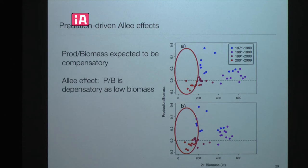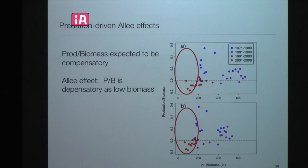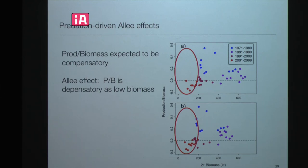If you look at the relationship between stock productivity and its biomass, normally in a compensatory situation you'd expect the growth rate to be near zero when the stock is large and to increase as the stock gets smaller. But what happens here is that at low population size, these stocks are now growing negatively — confounded with time because of the seal trend. There's only one way for this to go, unless somehow productivity boosts higher. This would eventually signal at least some sort of quasi-extinction for this particular stock.